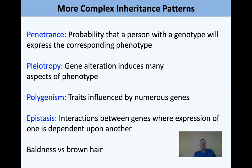There are even more complex inheritance patterns. Penetrance is the probability that someone with a genotype will express the corresponding phenotype. The classic example is BRCA1 deficiency — about 70% of people with that deficiency will get breast cancer, not 100%, because other genes, genetic backgrounds, and environmental conditions also play a role.